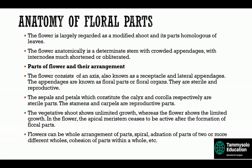The flower is largely regarded as a modified shoot, and its parts are homologous to leaves. A flower is a determinate stem with crowded appendages with internodes much shortened and obliterated, meaning flowers have a fixed time to emerge and a fixed design and structure.